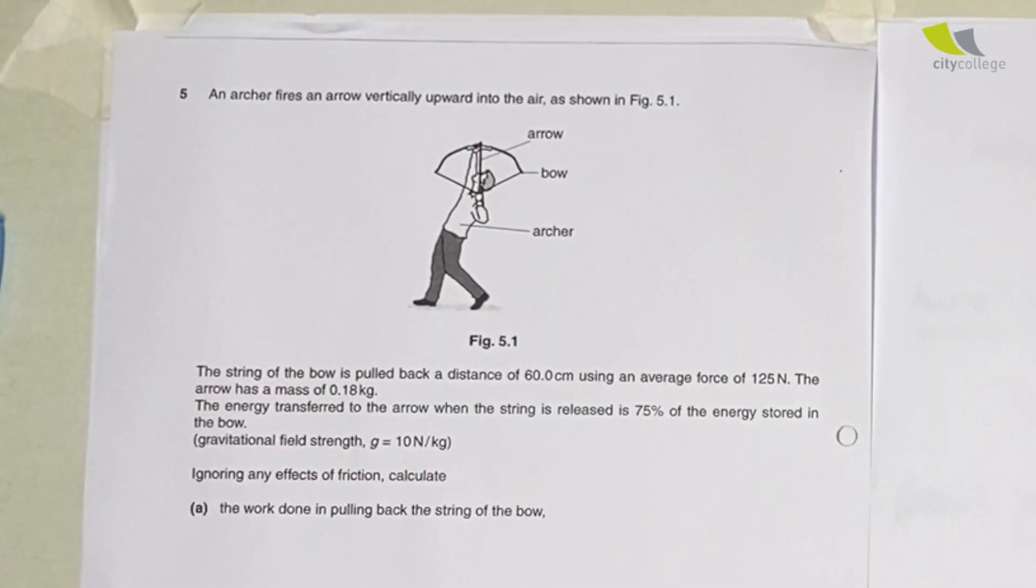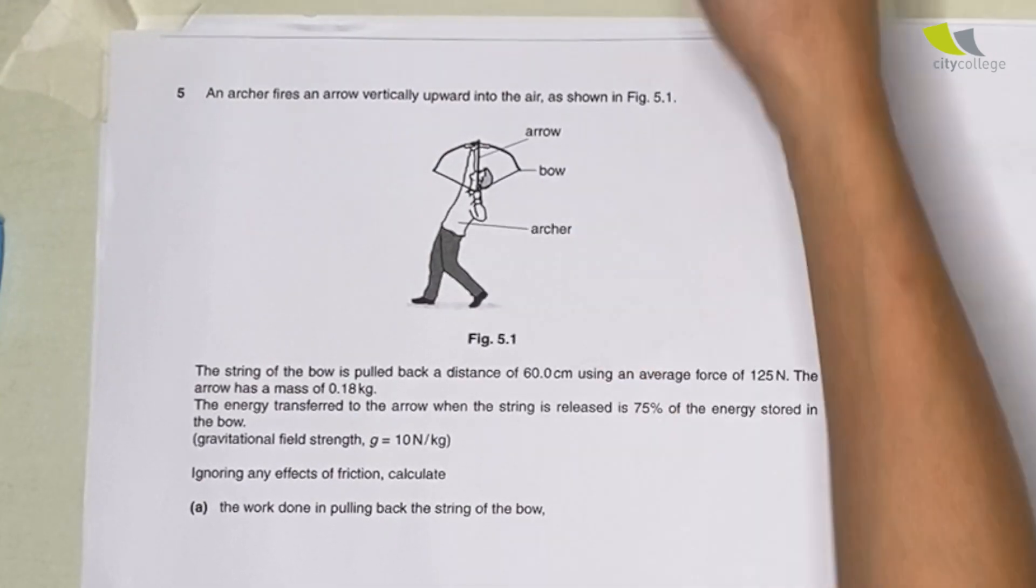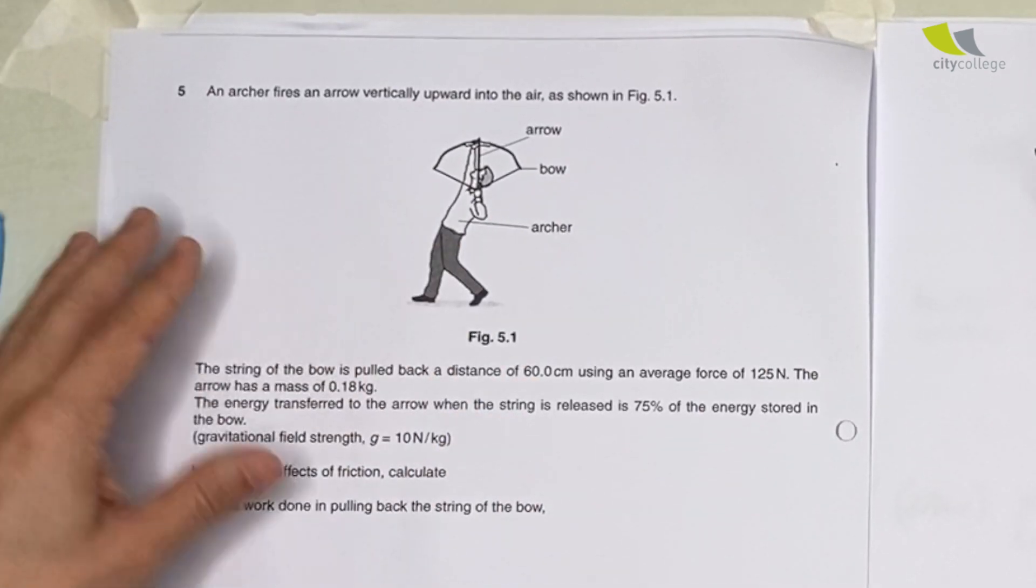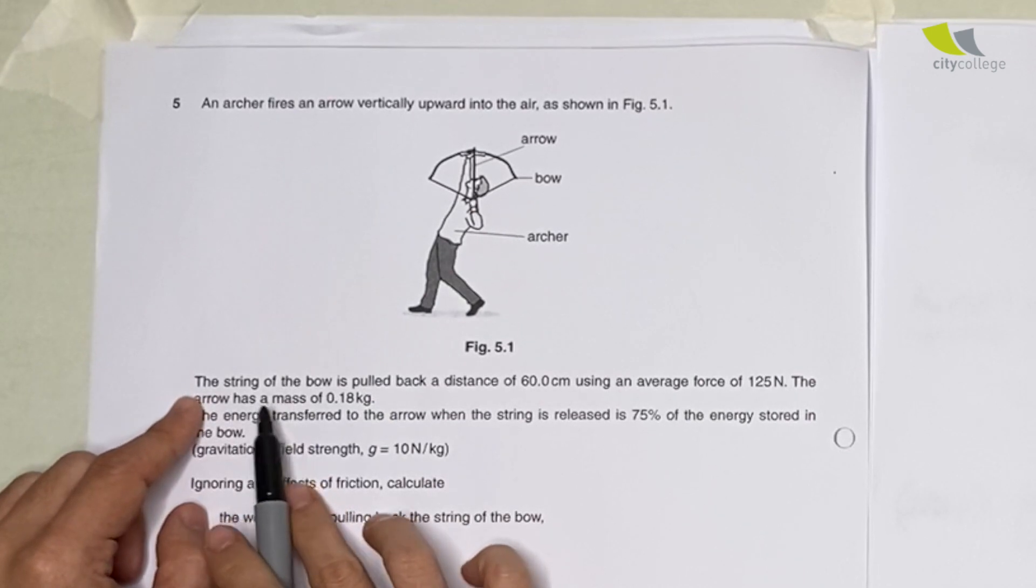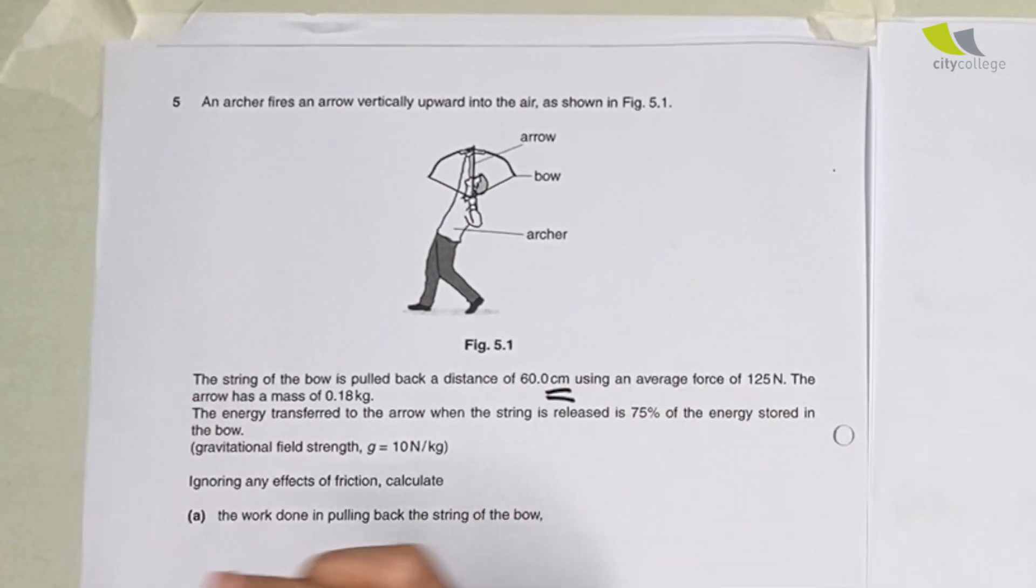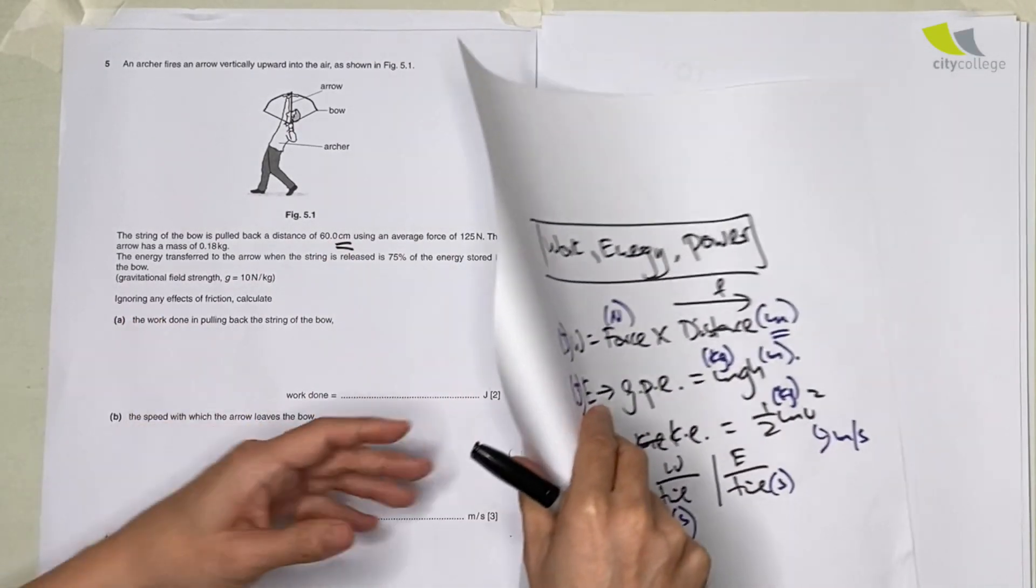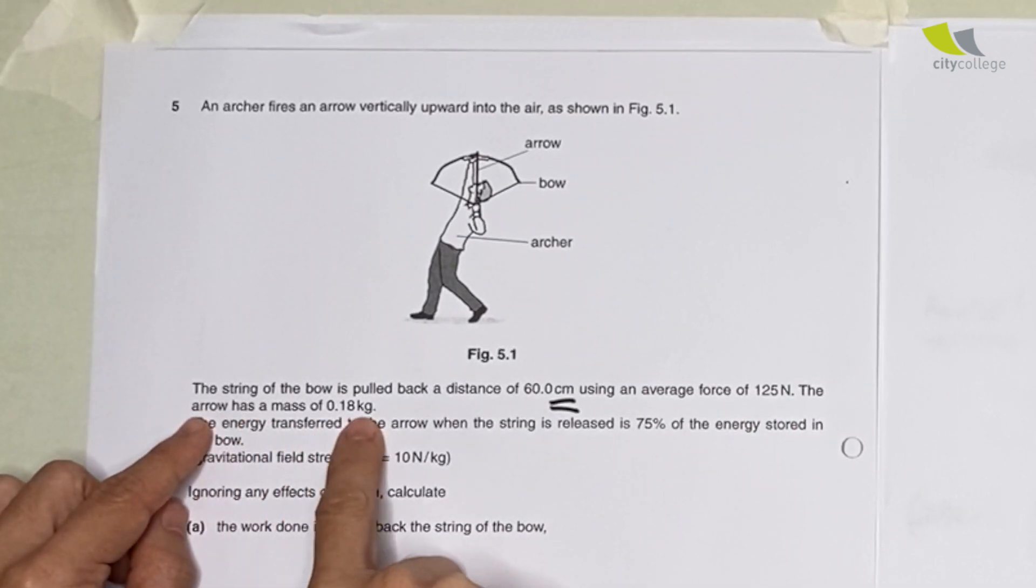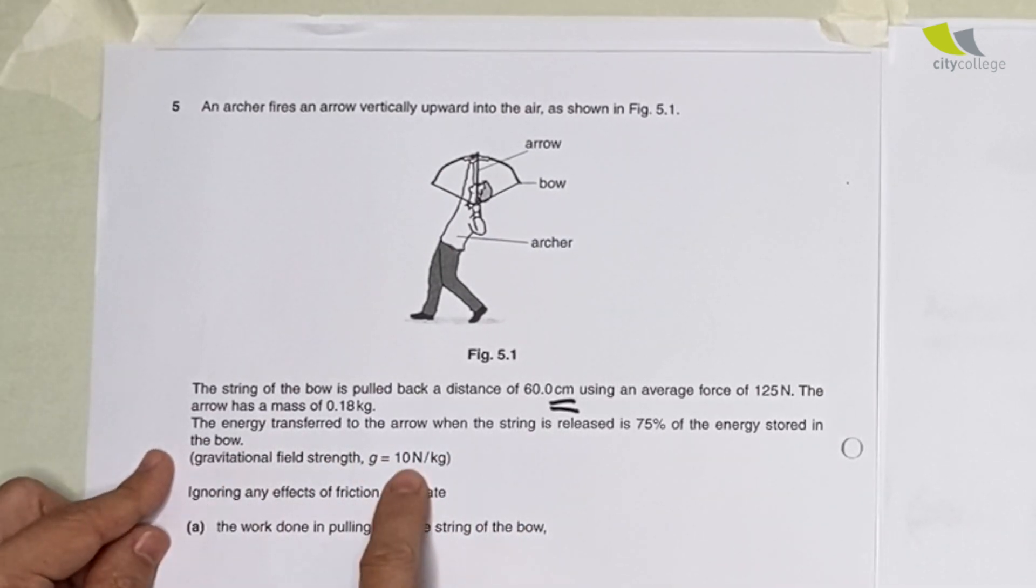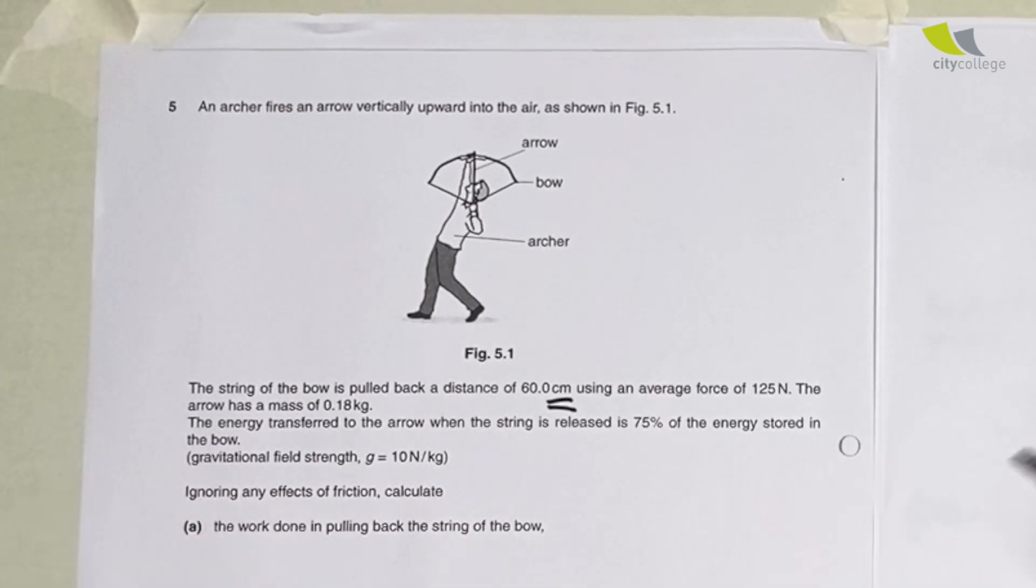Next one: this one's more creative. Archer fires an arrow vertically upward in the air. The string of the bow is pulled back a distance of 60 cm. Ah, see, over here there's a trap again: units for length, what do we need to use? Meters. Average force of 125 newton, arrow has a mass of 0.18 kg. Energy transferred is 75 percent. Ignoring any effects of friction, calculate the work done in pulling back the string of the bow.